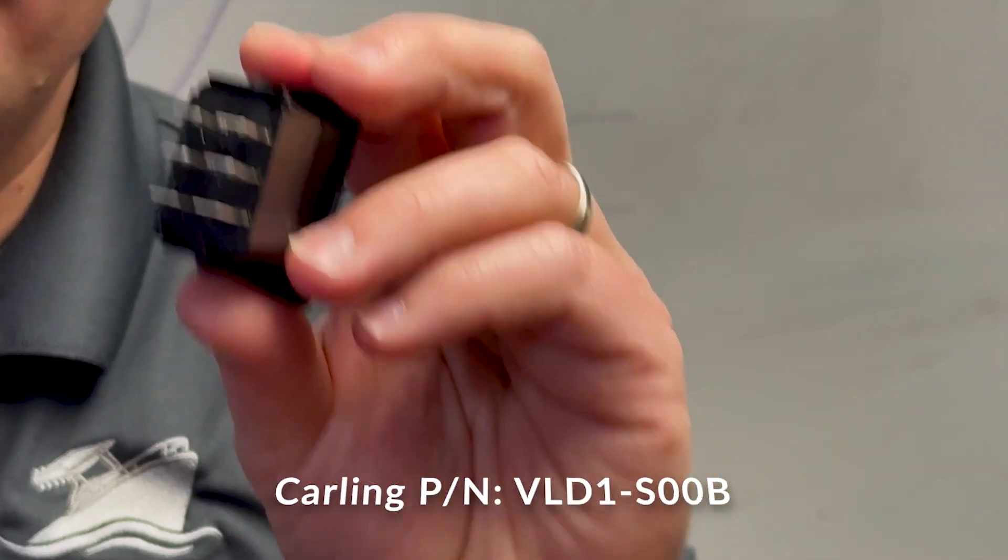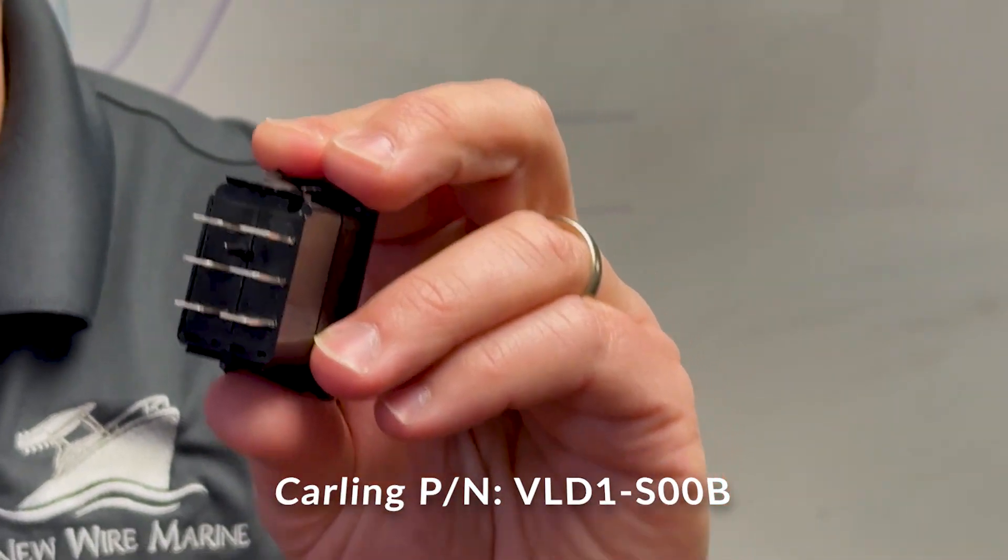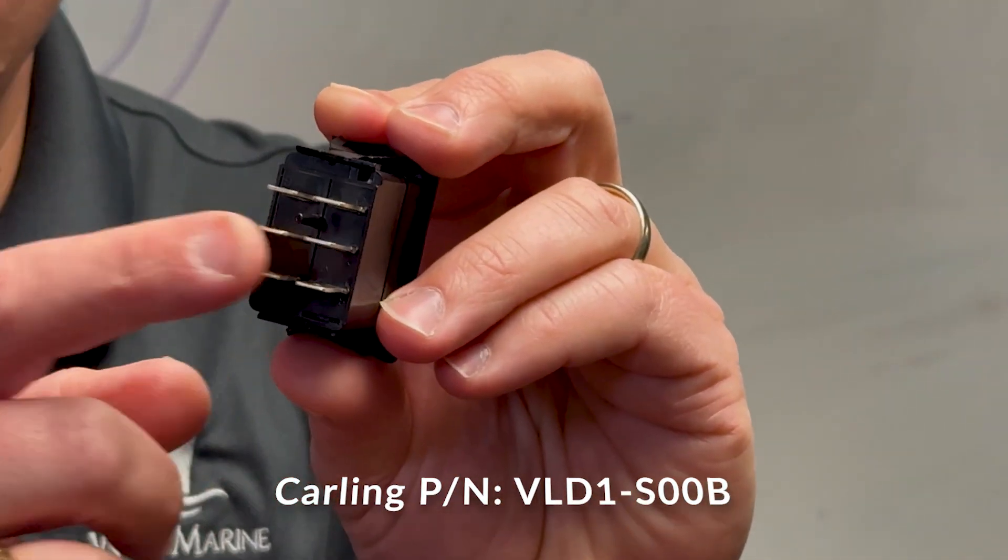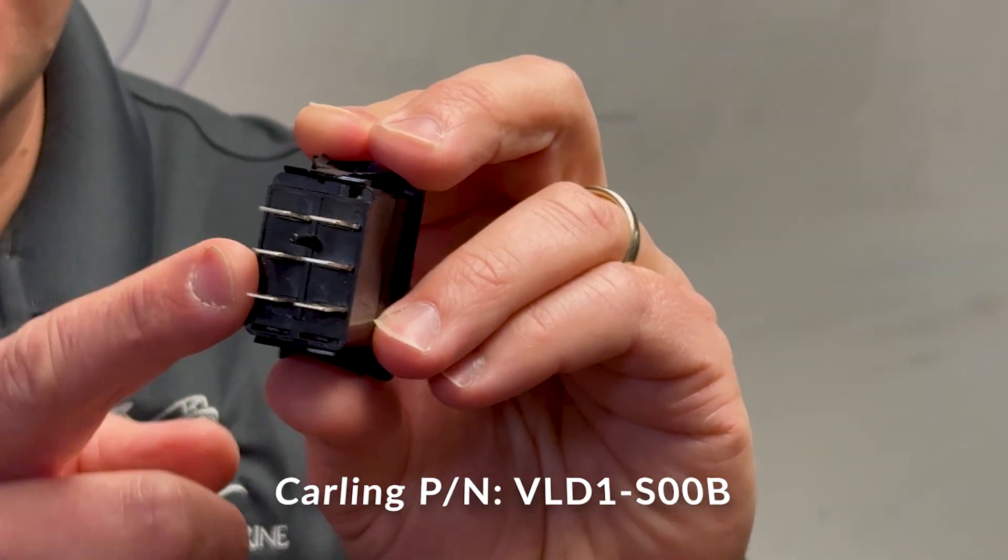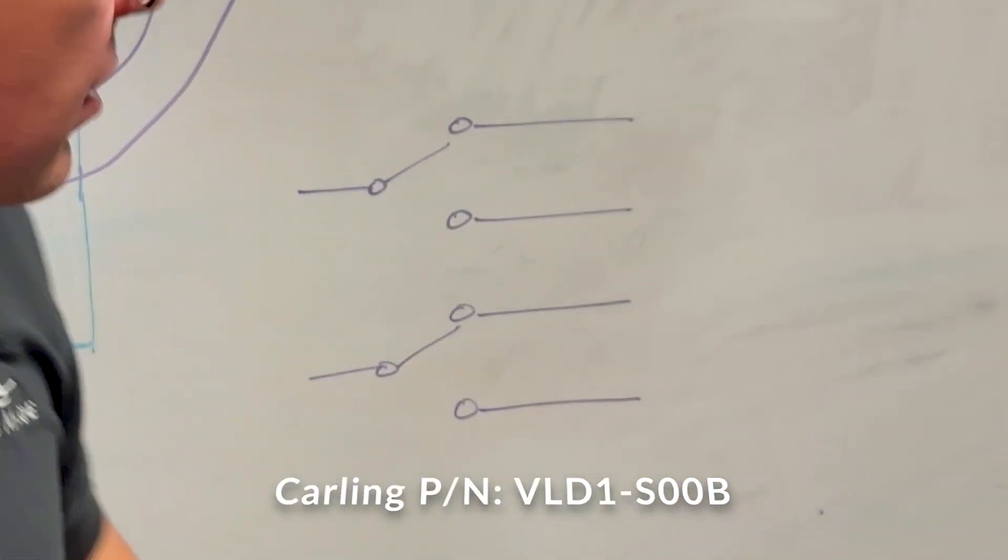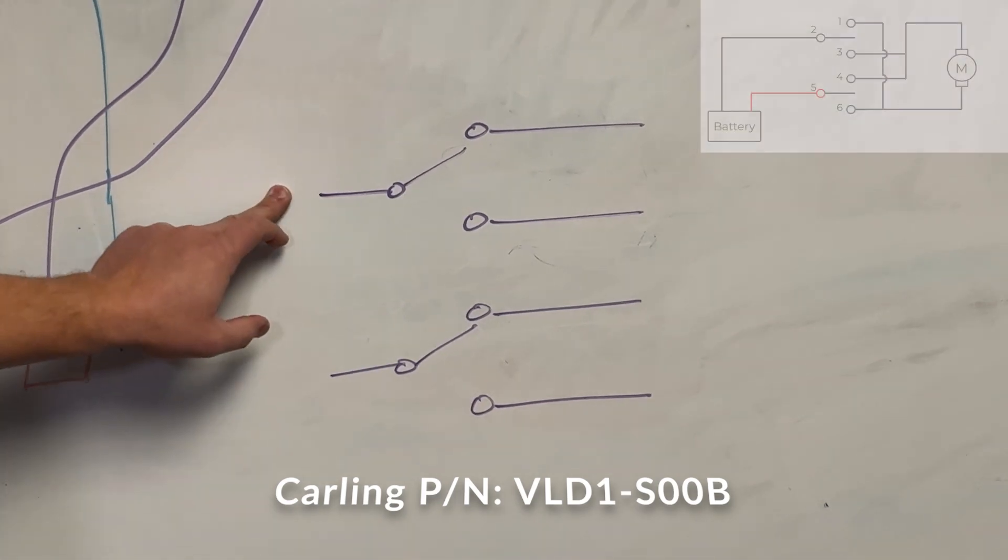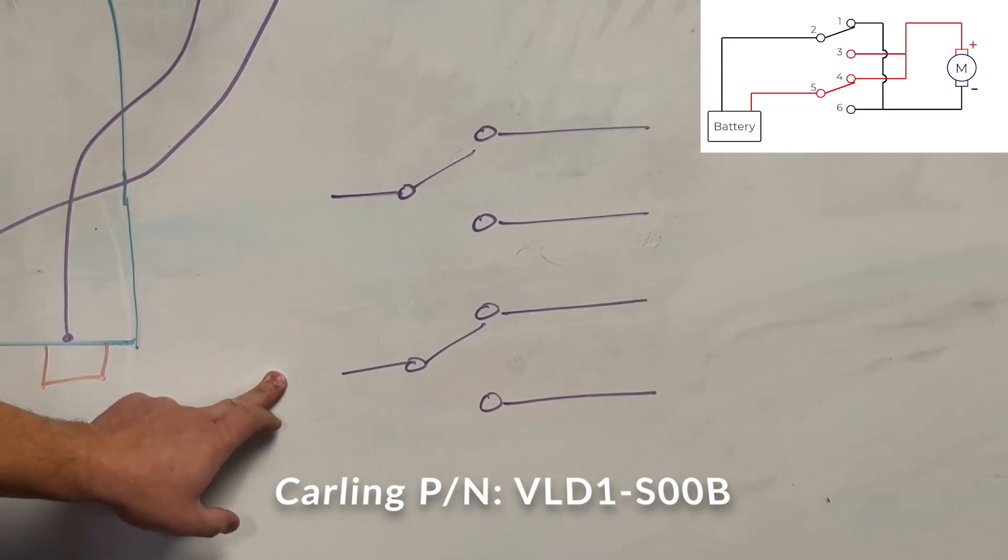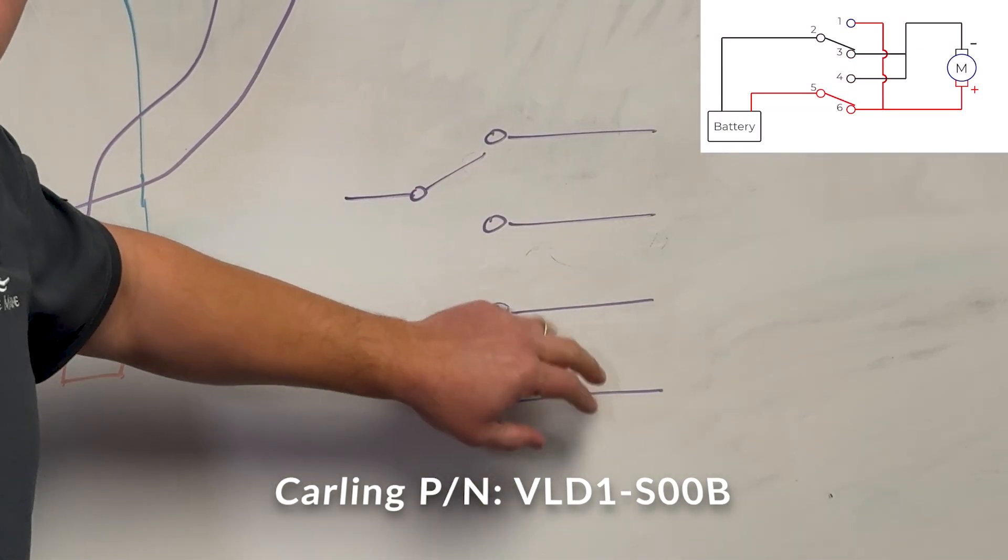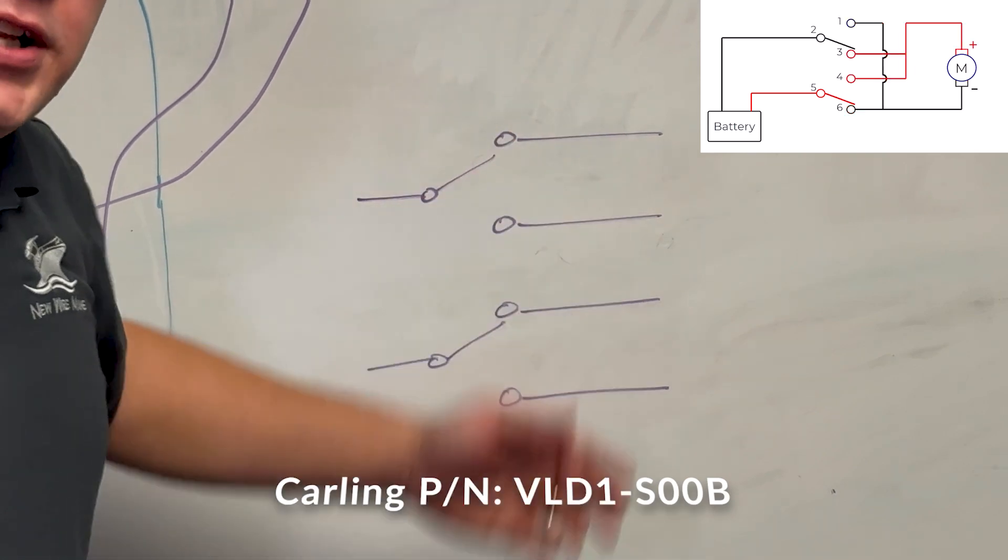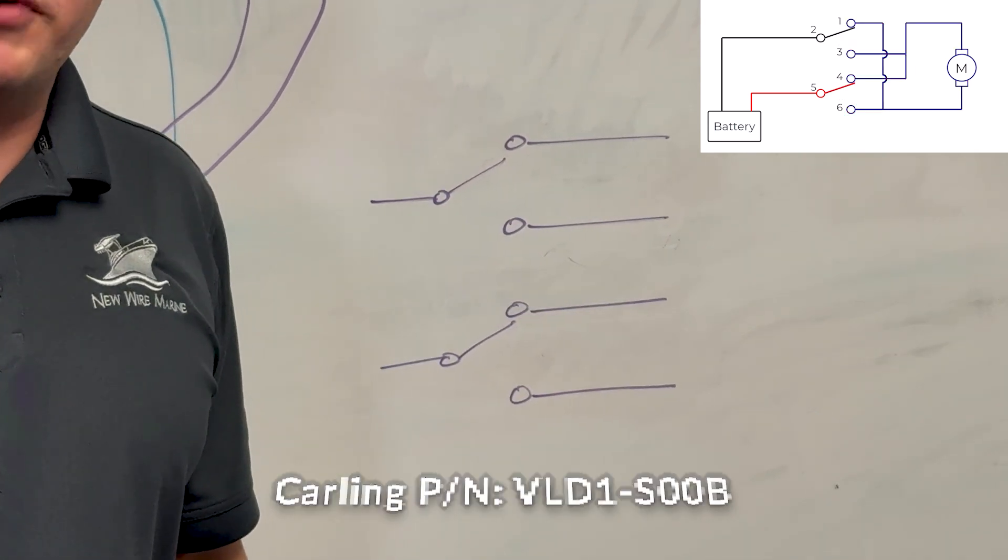This is a double pole, double throw, momentary rocker switch with six terminals, two inputs and two outputs per input. So four total. The schematic looks like this. And what we're going to end up doing is putting positive into one input, negative into another, and then a series of jumpers that allows that to reverse polarity depending on the position of the switch when you press it.